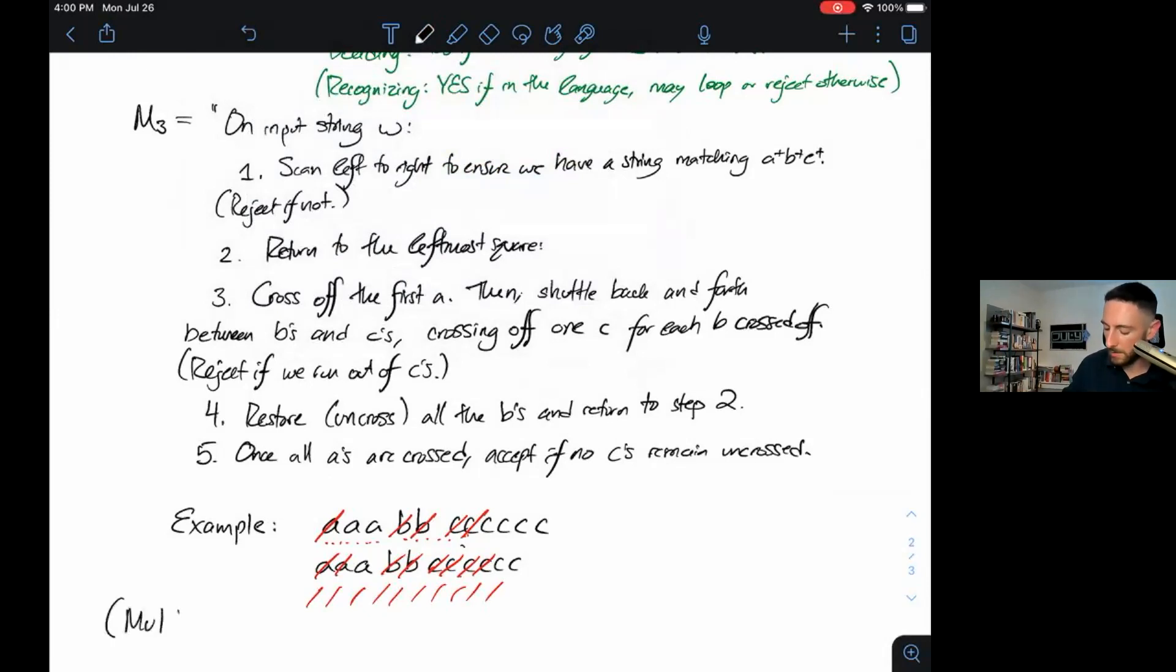That was multiplication on TMs. If you want to get even more clever, you can try to write down a Turing machine that will multiply two numbers written out as decimals. It's a lot more complicated. You've got to carry, you've got to count, you've got to be creative with the way you mark things. But it is doable.